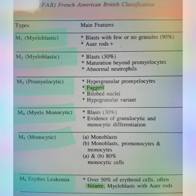The second type is myeloblastic with maturation. In this stage you will see that there will be 30 percent blast cells, and there will be some maturation beyond the promyelocyte. The first stage is the myeloblast and the second stage is the promyelocyte. Maturation happens only up to this amount, and you will also see some abnormal neutrophils.